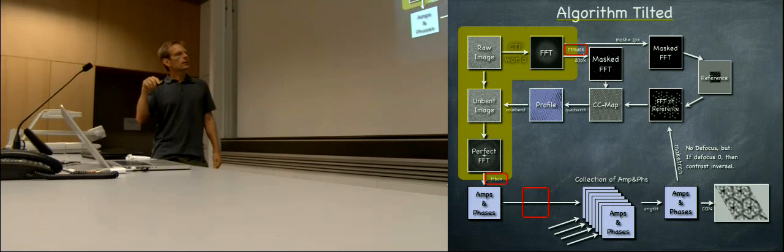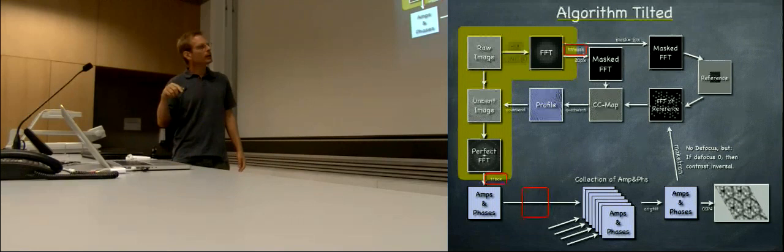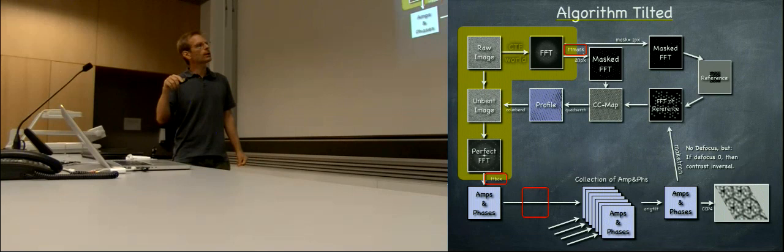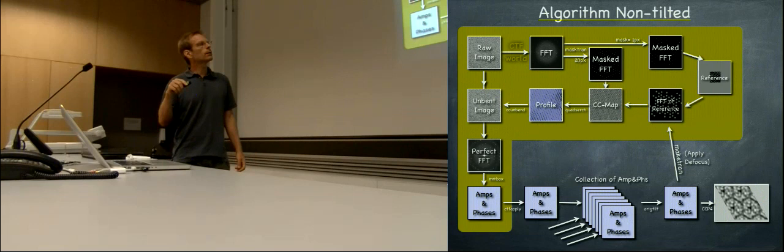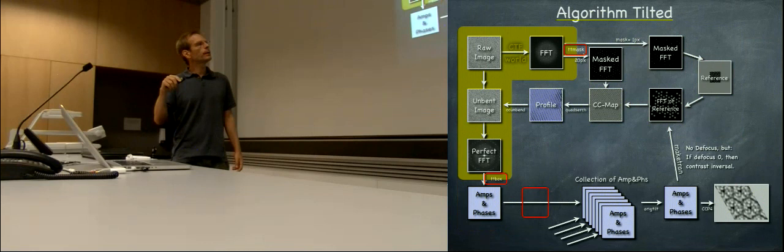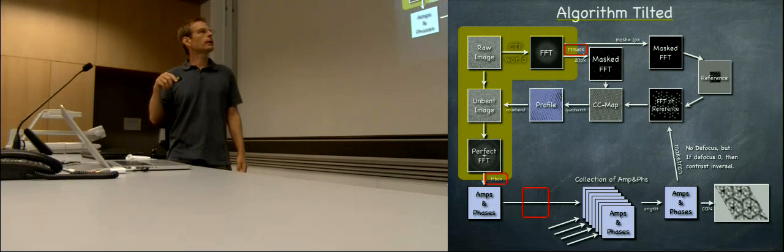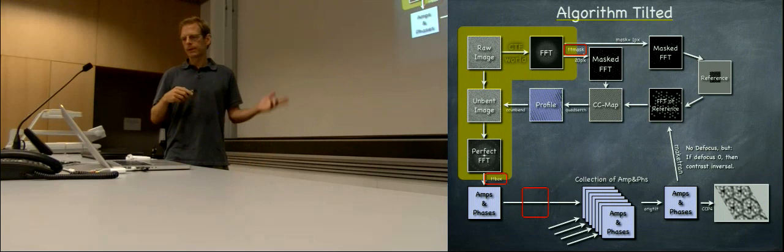When you want to use a synthetic reference with Megtron using our 3D reconstruction or 2D average, we need to make a reference that has no defocus applied. Before, Megtron applied defocus to make a nice reference that fits with Thon rings. Now we need a reference without Thon rings, and we have implemented that — Megtron is not applying Thon ring effects there.